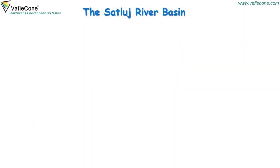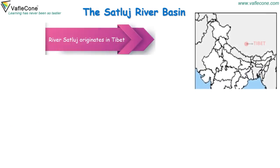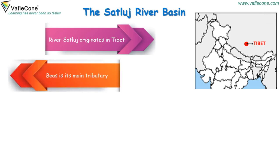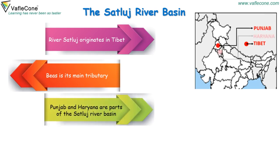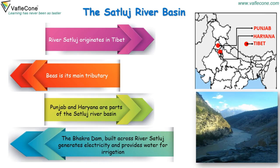The Satlaj River Basin: River Satlaj originates in Tibet. Biyaas is its main tributary. Punjab and Haryana are parts of the Satlaj River Basin. The Bacra Dam, built across the river Satlaj, generates electricity and provides water for irrigation.